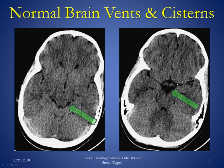Normally, the suprasellar cistern is a very symmetric structure. Whenever you have herniation, such as uncal herniation, it becomes asymmetric, and this is something you should pay attention to when looking at those images. Additionally, on the image on the left, you can also see the third ventricle and the lateral ventricles.